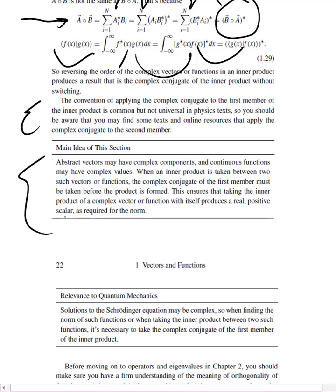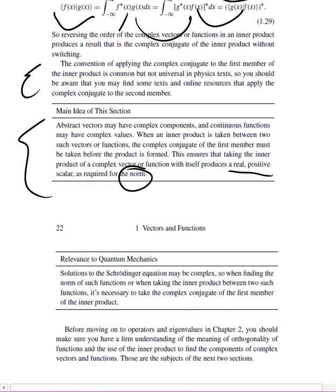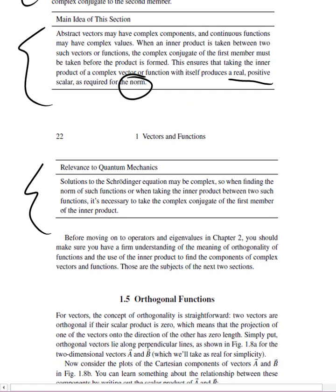The main ideas of this section are fairly straightforward. Abstract vectors and functions can have complex values. If you take an inner product involving those, you have to remember to take the complex conjugate of the first member before you form the product. That way, you can be sure that the norm is going to come out real and positive. The relevance to quantum mechanics: the solutions to the Schrödinger equation may be complex, so if you're going to find the norm of them, you've got to take the complex conjugate when you do the inner product.